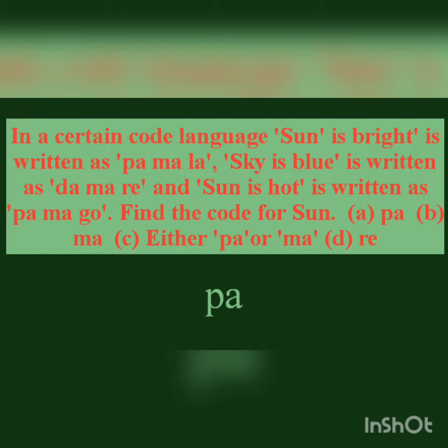'Sun is bright' is written as P-A-M-A-L-A, 'sky is blue' is written as D-A-M-A-R-E, and 'sun is hot' is written as P-A-M-A-G-O. Find the code for 'sun'.